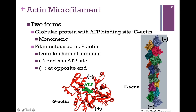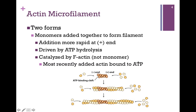The minus end is where ATP binds, and the plus end is the other end. As the monomers assemble, a minus end carrying ATP binds with a plus end that does not carry ATP. The plus and minus designation simply means it grows more rapidly at one end — the plus end grows faster than the minus end, as shown by fluorescent studies. This assembly into the filament is driven by ATP hydrolysis. Importantly, ATP hydrolysis is catalyzed by F-actin, not the monomer — meaning ATP is hydrolyzed after assembly into the filament, not before.